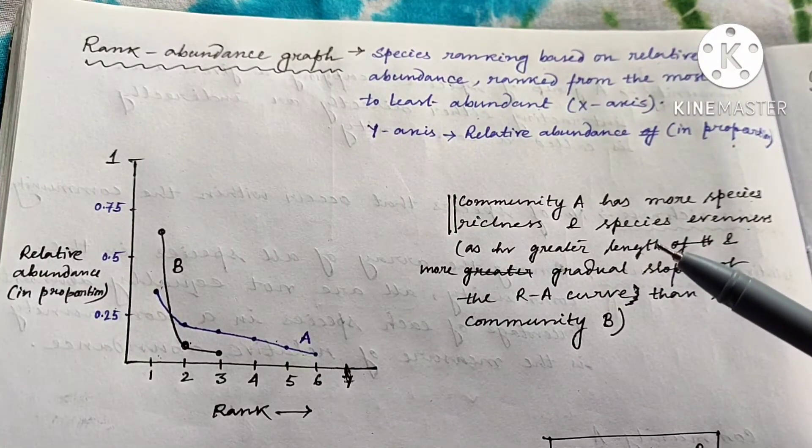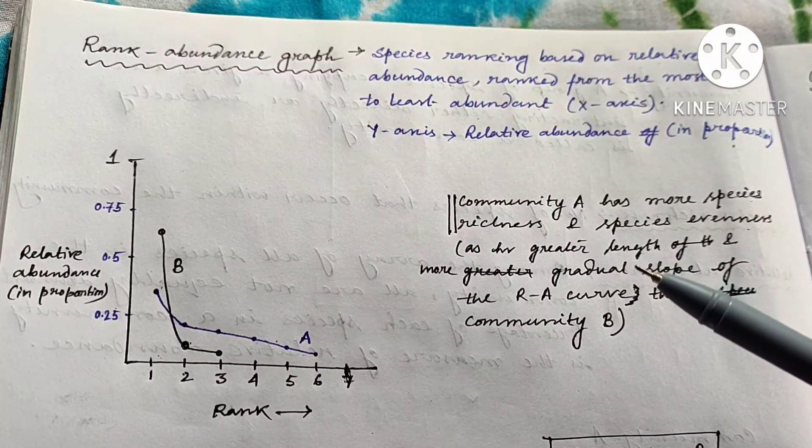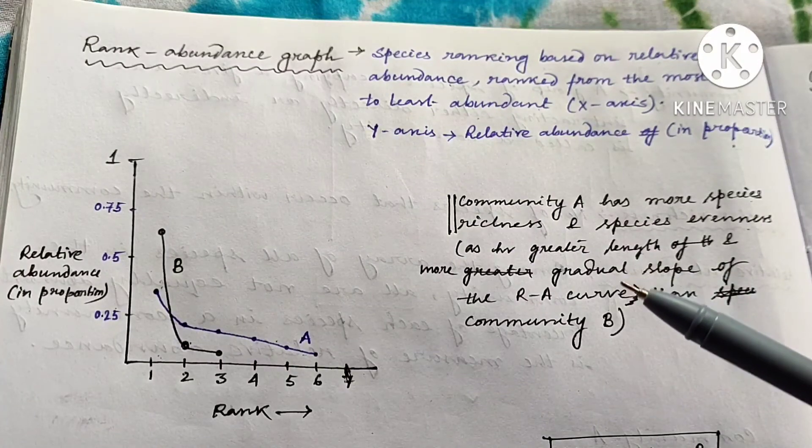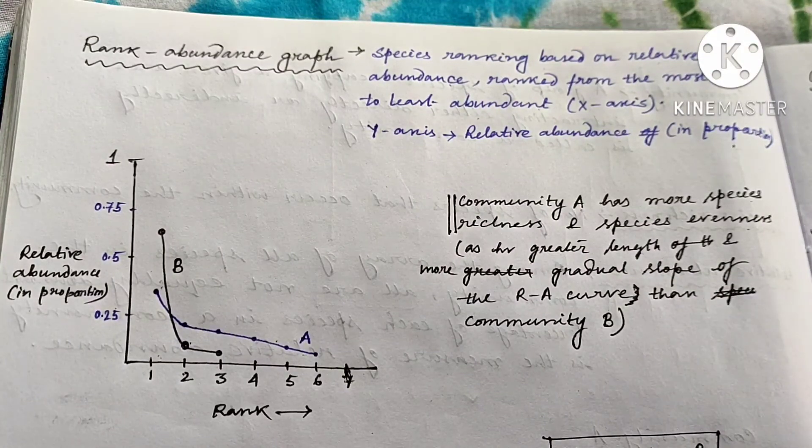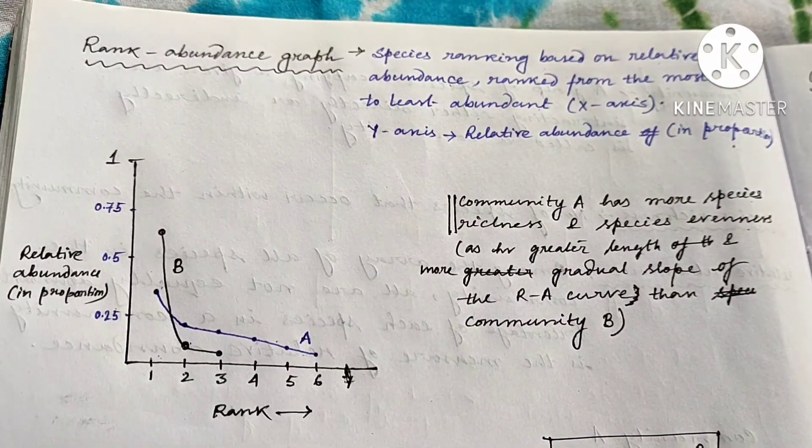Community A has more species richness and species evenness as it has a greater length and more gradual slope of rank abundance curve than community B. By plotting the rank abundance graph you can easily compare two communities based on their species richness and species evenness. For today it is enough — we will meet in the next video. Thanks for watching and happy learning.